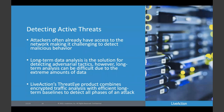To wrap up: attackers already have access to the network, making it challenging to detect malicious behaviors. Long-term data analysis is the solution for detecting these kinds of adversarial tactics, but long-term analysis can be difficult to perform due to the extreme amounts of data. We've taken some of the latest advances in statistical processing to combine encrypted traffic analysis with efficient long-term baselining to detect all phases of an attack. We still have a few minutes for questions — happy to take them now.